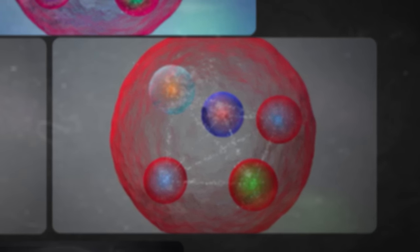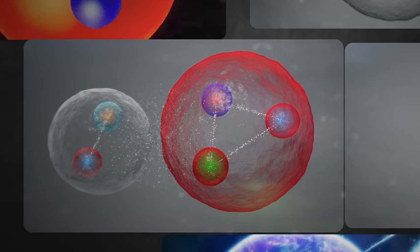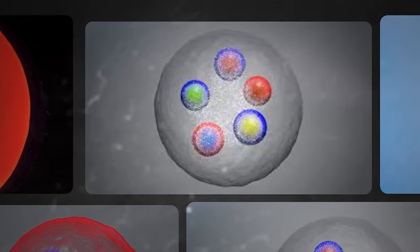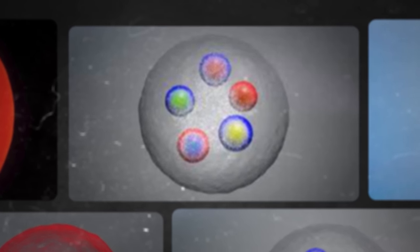Usually, quarks combine in twos and threes. But in very rare cases, they can combine in groups of four and five. These ones are called tetraquarks and pentaquarks, respectively.